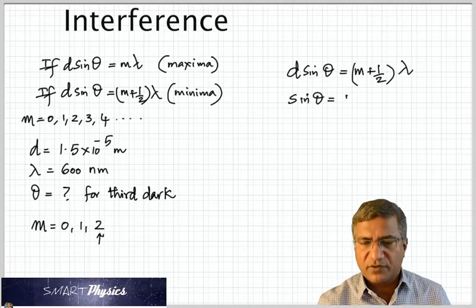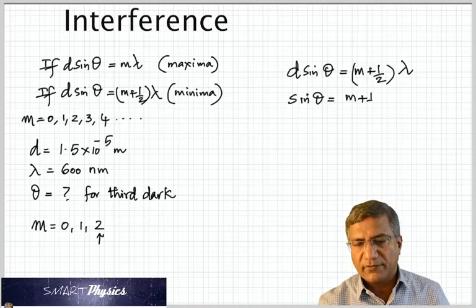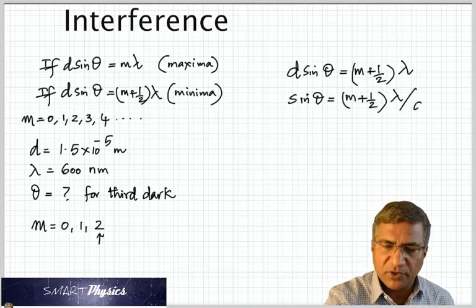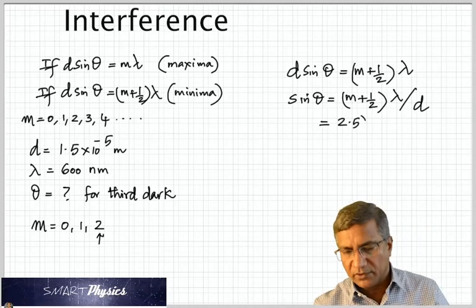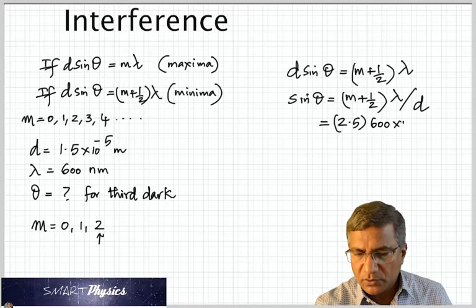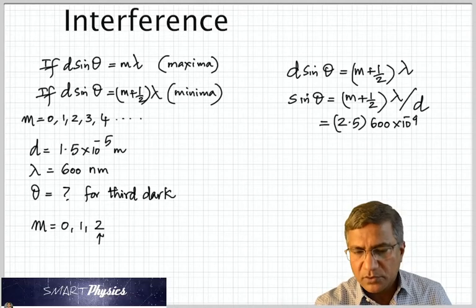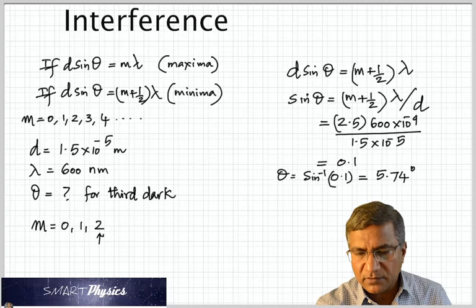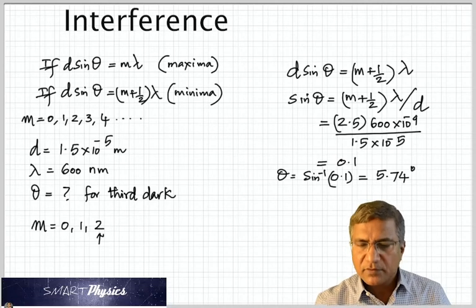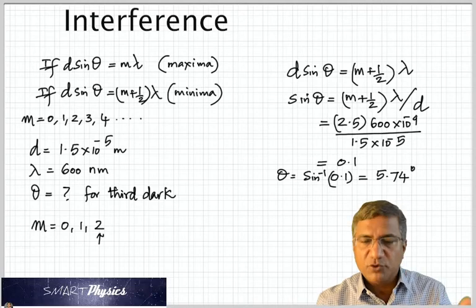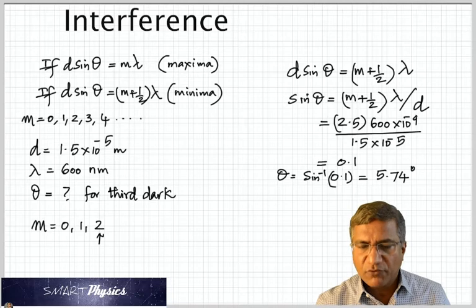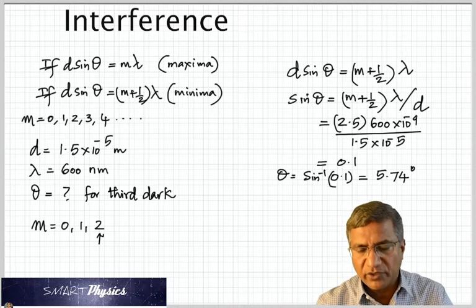And we're looking for theta. So we'll make sin theta the subject first. And then you have M plus half times lambda divided by D. M is 2 in this case. And you get M plus half is 2.5. So the answer comes out to be 5.74 degrees.